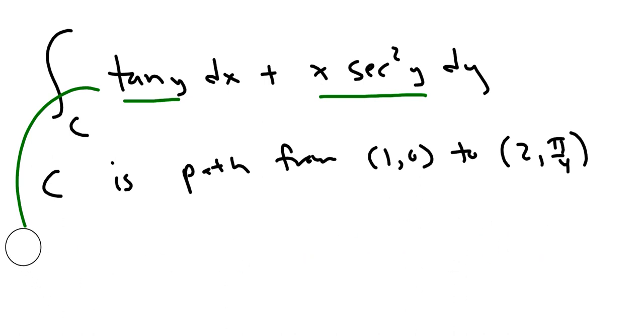So remember, we showed already what the scalar function. f(x,y) is equal to x tangent y. And since it's independent of path, all you need to do is find f of the end point.